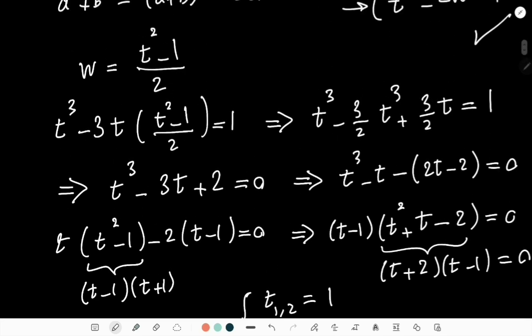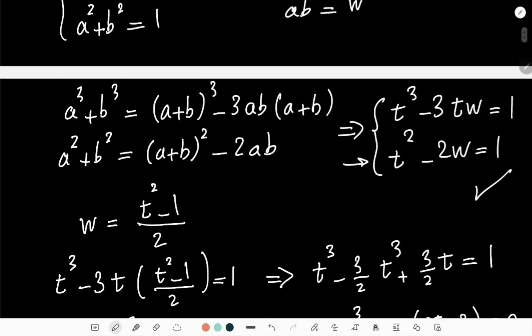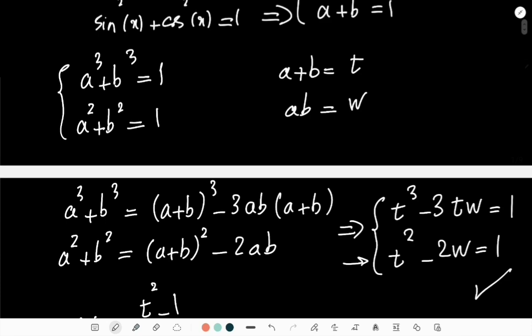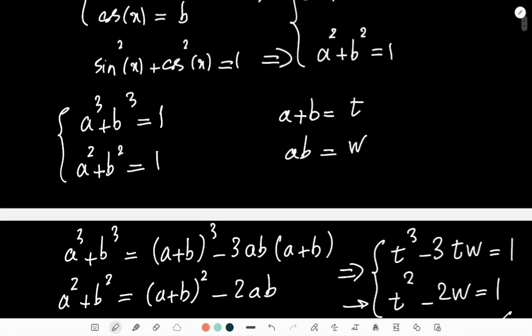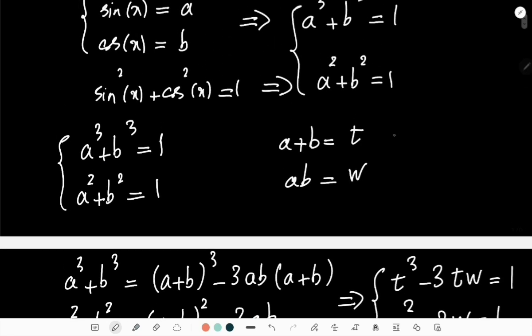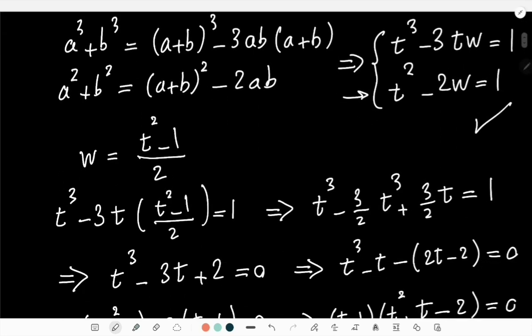But let's go back to the definition of t. What was t? t was a + b, and a was sin(x), and b was cos(x). So it means that is basically sin(x) + cos(x).